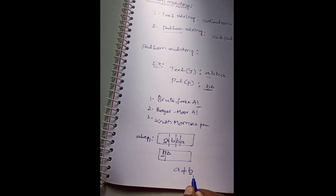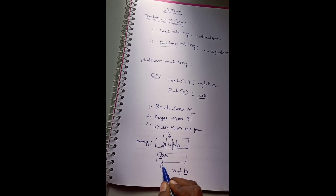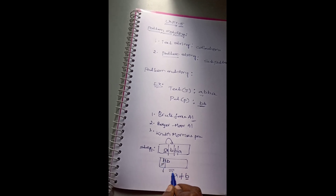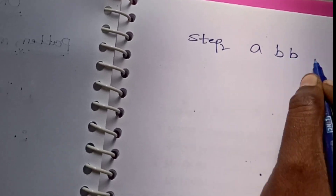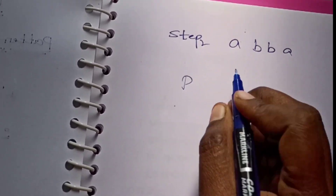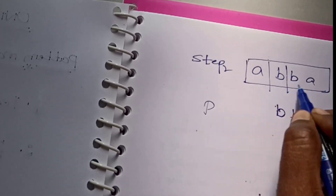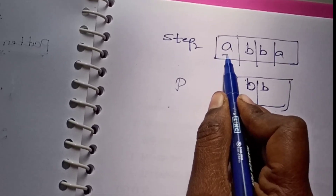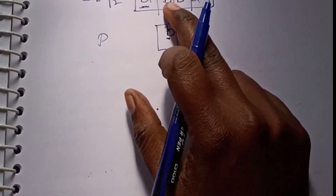The first letter is A; A is not equal to B, so we move to the next position. We move both positions to the next step. Next step: A, B, B, A — our pattern is B B, so we move to that position. In the next step we check the next position of the text with the first position of the pattern.